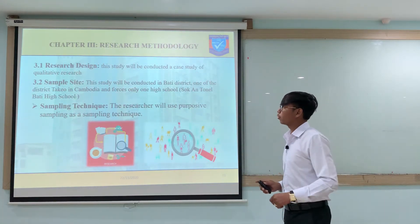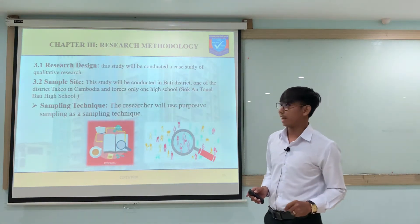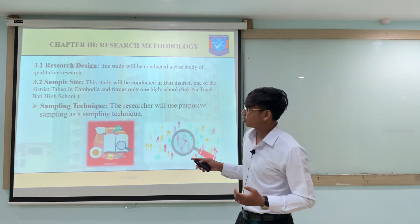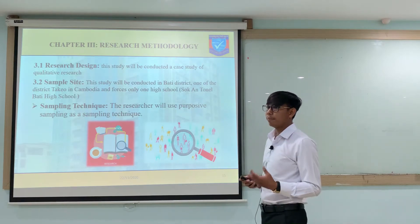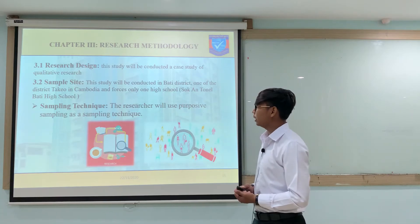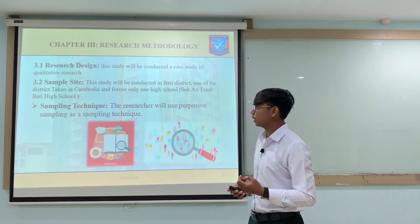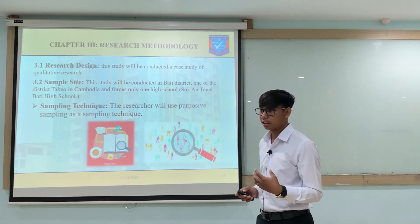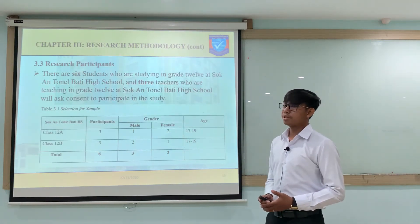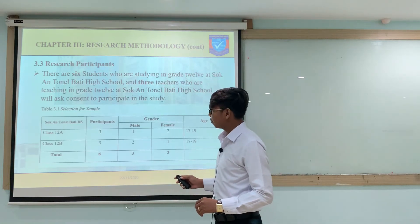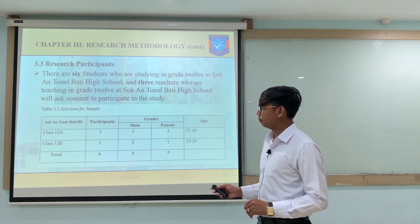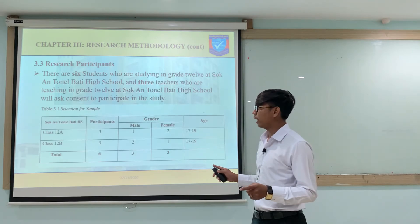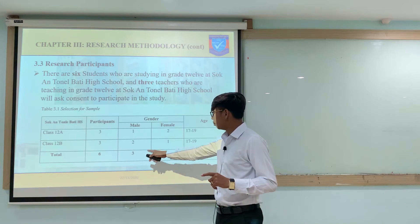Now moving to chapter 3, research methodology. Section 3.1 covers the research design: I conducted a case study using qualitative research. For section 3.2, the sample size, I conducted research at Liberty District, one of the districts in Takeo Province, Cambodia, focusing on Sok An Liberty High School. For the sampling technique, I used proportional sampling. My research participants include 3 students from Grade 12 Class A and 3 students from Grade 12 Class B — 2 female and 1 male in each class — for a total of 6 students: 3 male and 3 female, aged 17 to 19.